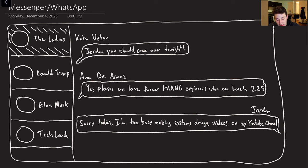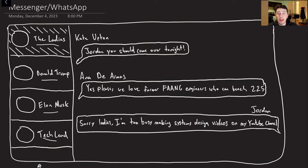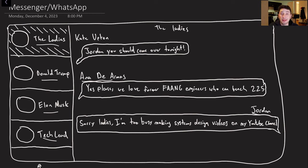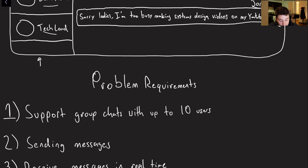Here's what an app like that might look like. On the left side of the screen, we've got a bunch of different chats — for example, the ladies, Donald Trump, Elon Musk, tech lead. I can select one and show it off. We've got Kate Upton inviting me over, Ana de Armas letting me know that she loves FANG engineers, and myself, who is too busy making systems design videos on YouTube.